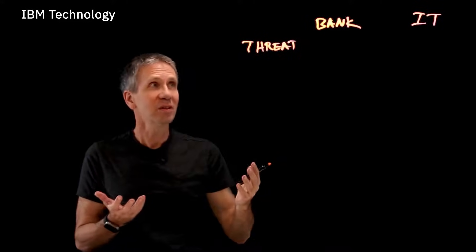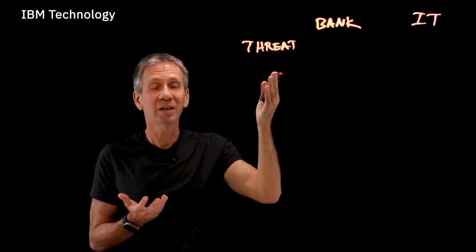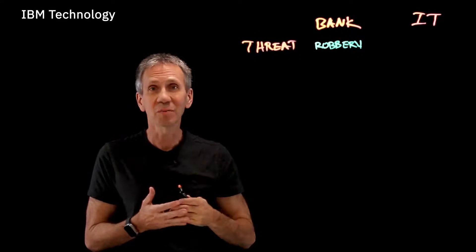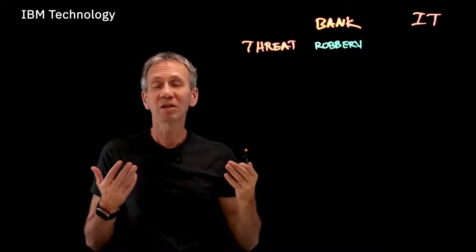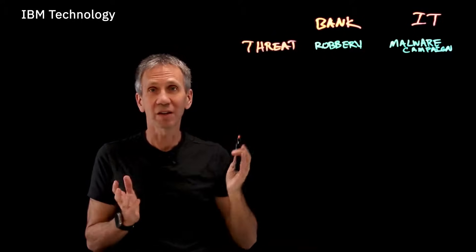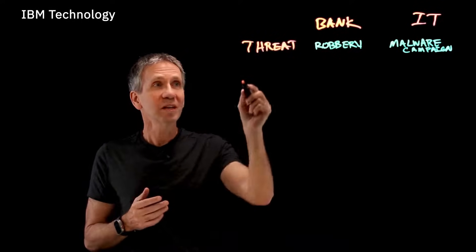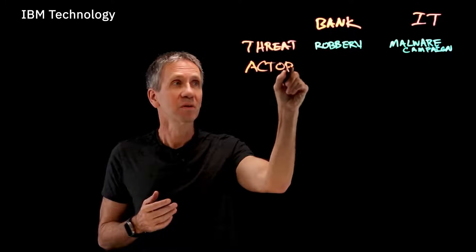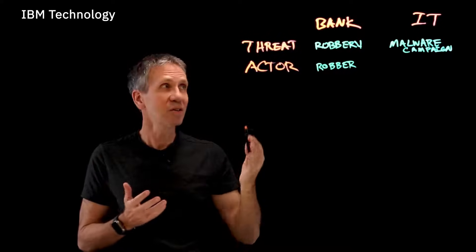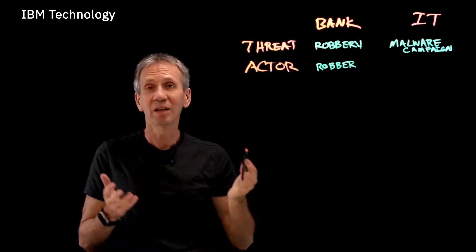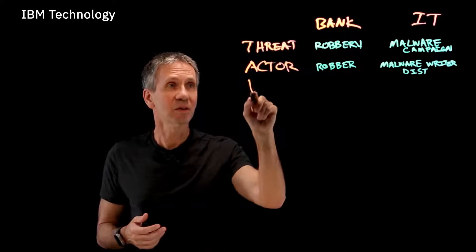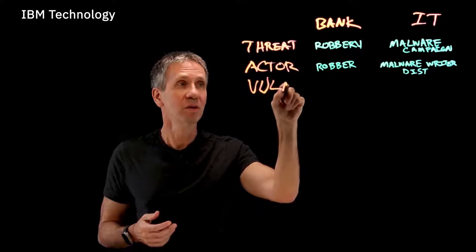In the case of a bank, a threat might be a robbery. In an IT system, it could be a break-in or a malware campaign — that's the overarching threat. The next thing to consider is the threat actor. In the bank example, that's the robber. In the IT malware example, it's the person who wrote or is distributing the malware.